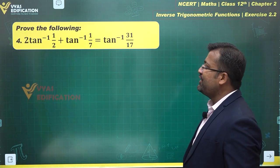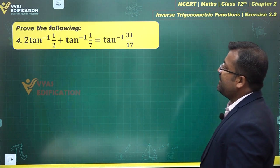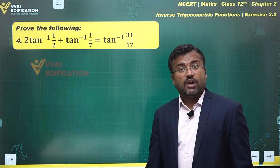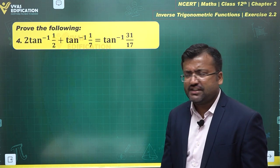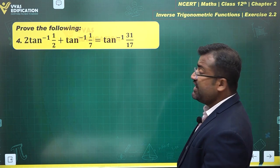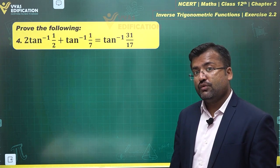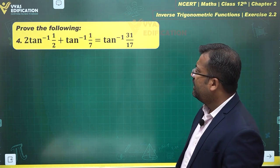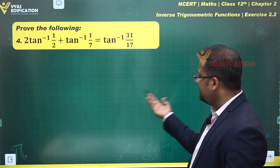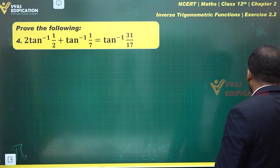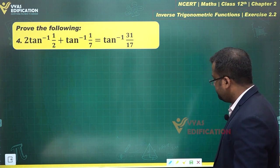Let's solve this question. What does the question say? Two tan inverse one by two plus tan inverse one by seven. There are a lot of tan inverse terms on the left hand side but there's a single tan inverse on the right hand side. So what are we supposed to do? We'll have to combine these tan inverse terms to simplify the result. Let's do it.